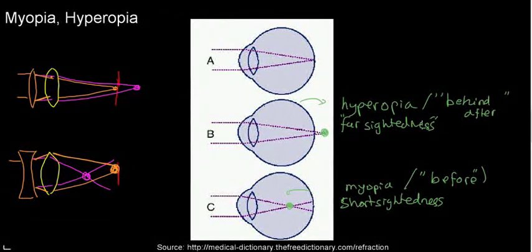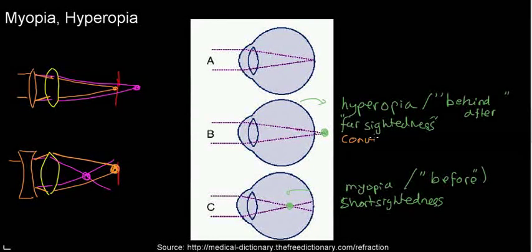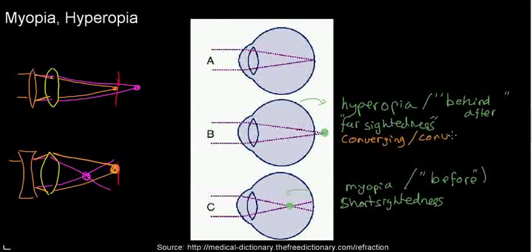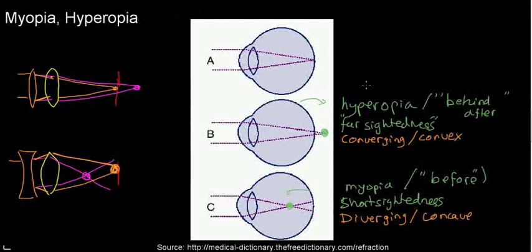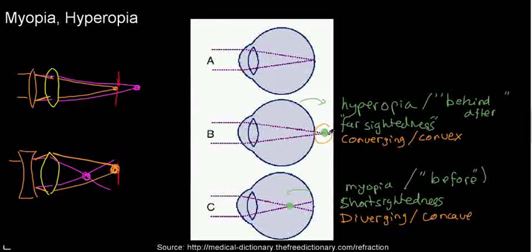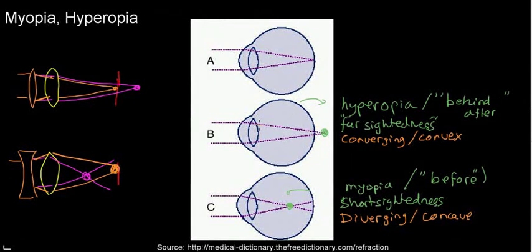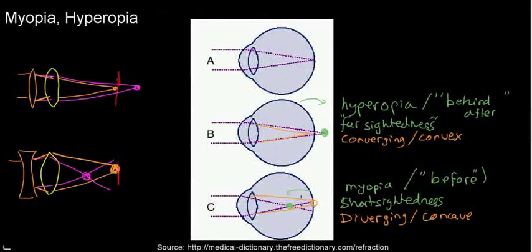So we can fix hyperopia — where the focal point is behind or after the retina — by making the light rays converge at a closer point using a converging lens, also known as a convex lens. And we can correct myopia using a diverging lens, also known as a concave lens. If asked in an open essay question: hyperopia means the focal point is behind the retina, corrected with a converging lens; myopia means the focal point is before the retina, corrected with a diverging lens to widen the angle so rays meet on the retina.